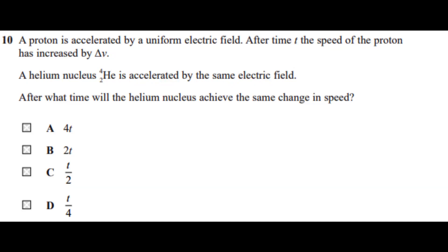A proton is accelerated by a uniform electric field. After time t, the speed of the proton has increased by delta v. A helium nucleus, which has nucleon number 4 and proton number 2, is accelerated by the same electric field. After what time will the helium nucleus achieve the same change in speed?